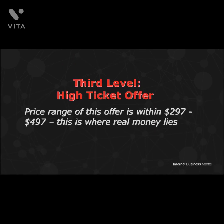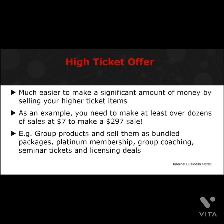The third funnel level is the high-ticket offer, priced within $297 to $497. This is where the real money lies — it's much easier to make a significant amount of money by selling higher-ticket items. For example, you need to make at least 42 sales at $7 to make just one $279 sale. You can group products and sell them as bundled packages, platinum membership, group coaching, seminar tickets, and licensing deals.